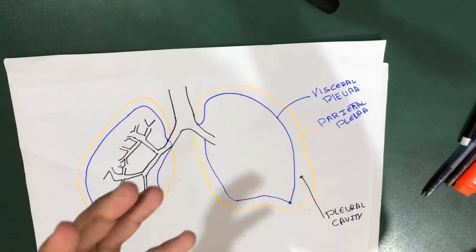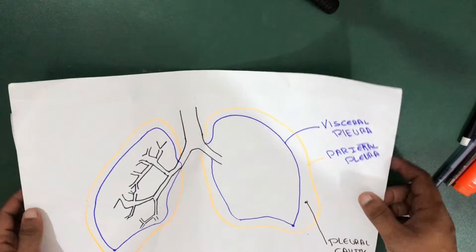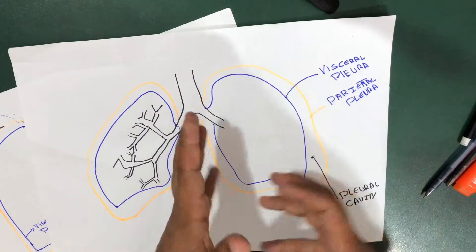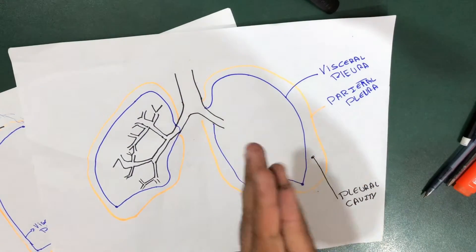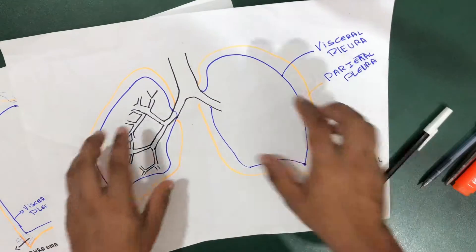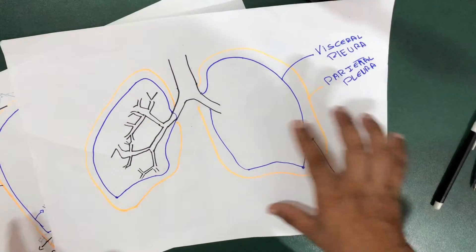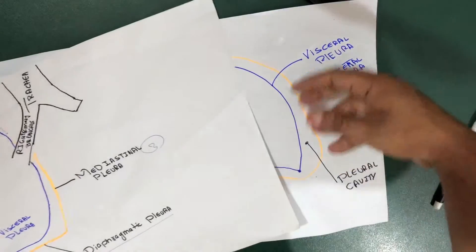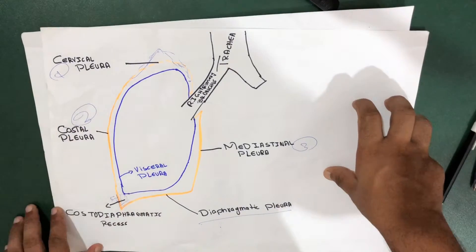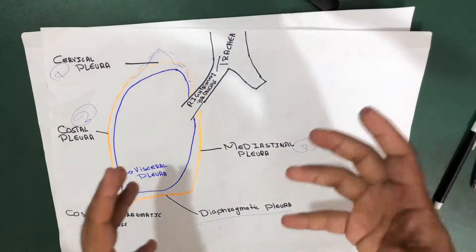The pleural cavity contains a protein-rich fluid — mainly albumin protein along with carbonates and other molecules — which helps in lubrication and reducing friction while we breathe. When we breathe, the lungs expand and move, so this fluid is essential. That's the basic idea of the pleural cavity, visceral pleura, and parietal pleura.